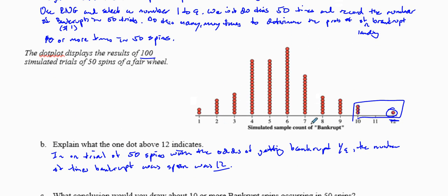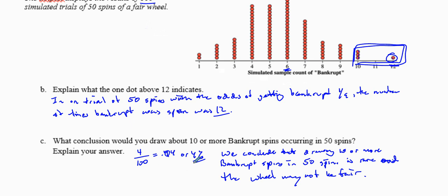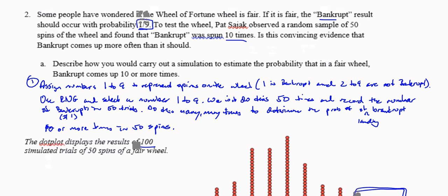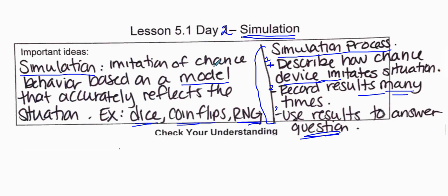Going through this chance behavior, we can see that with 1 out of 9 odds, we got 4% across 100 trials — 4% is a pretty rare outcome. So we can conclude that landing on bankrupt 10 or more times may be rare, and this wheel might not be fair. To summarize simulations: imitate chance behavior, describe a chance device that imitates the situation, record results many times, and use those results to answer the question. Good luck!